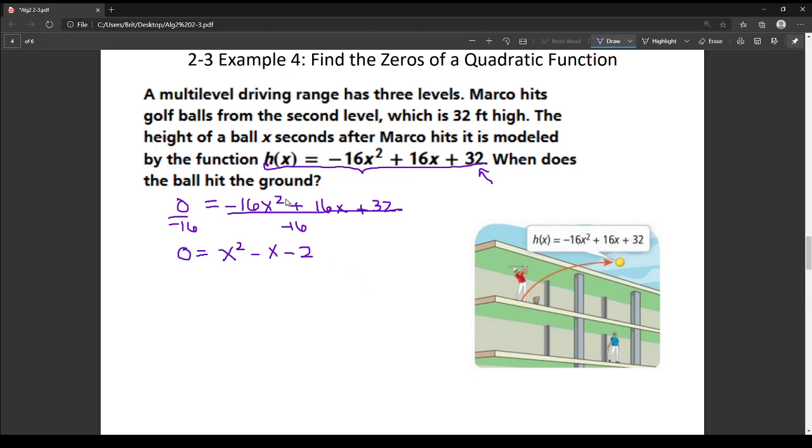So just like that, this went from being kind of a monster to factor to being something kind of small. And that just came from factoring out my GCF. So now this has an a value of 1, so I could factor this just by using my double bubble method.